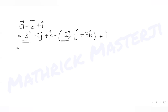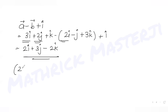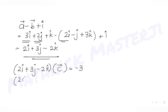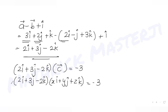Computing a − b + i: (3i + 2j + k) − (2i − j + 3k) + i = 2i + 3j − 2k. Taking the dot product of this with c = xi + yj + zk and setting it equal to −3 gives us 2x + 3y − 2z = −3.